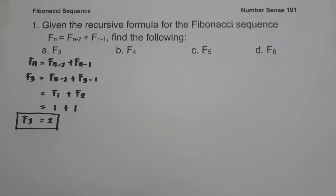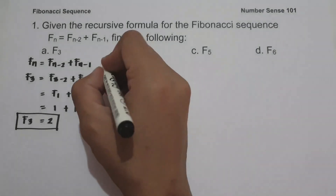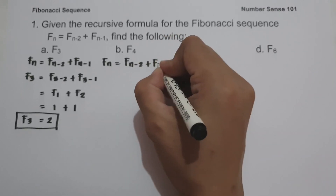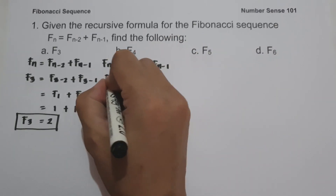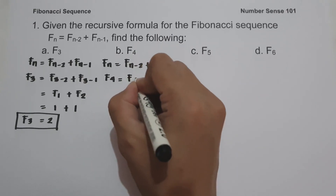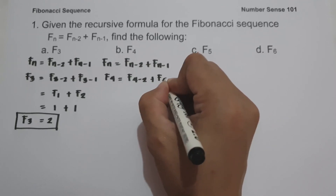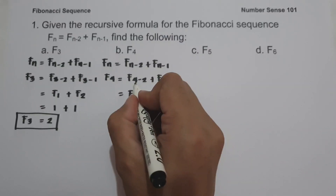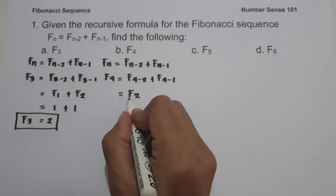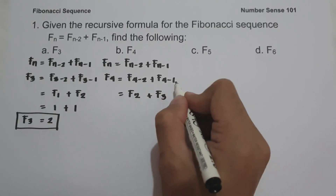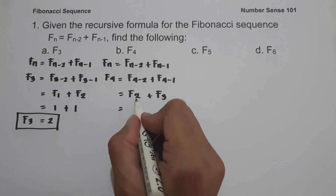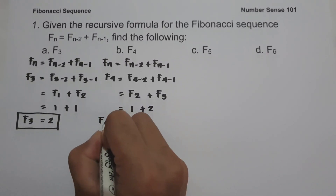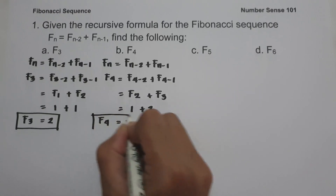On letter B, we are going to find the value of f(4). Using the recursive formula, f(4) = f(4-2) + f(4-1), which gives us f(2) + f(3). Since f(2) = 1 and f(3) = 2, the value of f(4) is 1 plus 2, which is 3.